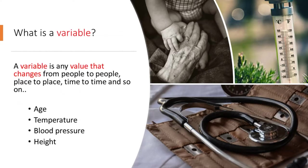What is a variable? You were introduced to this term in a previous lesson. A variable is any value that changes from people to people, place to place, time to time, and so on. For instance, age, temperature, blood pressure, and height could all be variables.